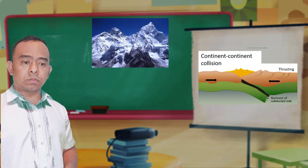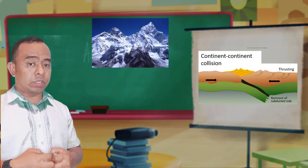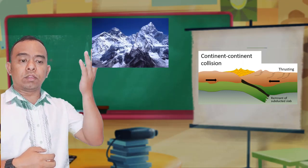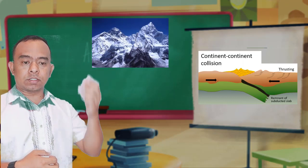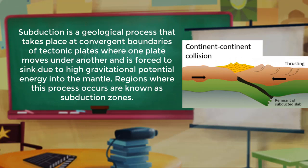Subduction is impossible between two colliding continental plates. Pressure is released by pushing the crust upward and forming the Himalayan peaks. Subduction is a geological process that takes place at convergent boundaries of tectonic plates, where one plate moves under another and is forced to sink due to high gravitational potential energy into the mantle. Regions where this process occurs are known as subduction zones.